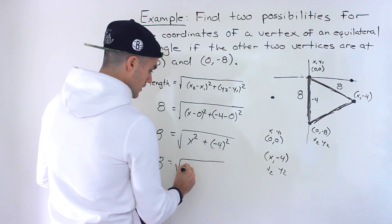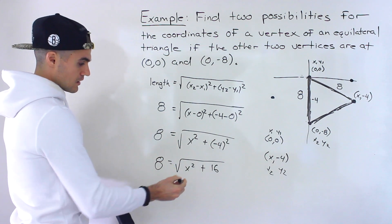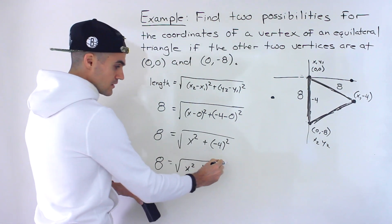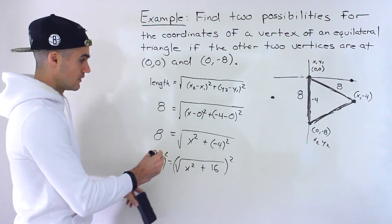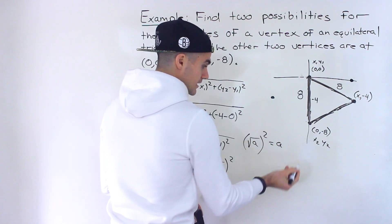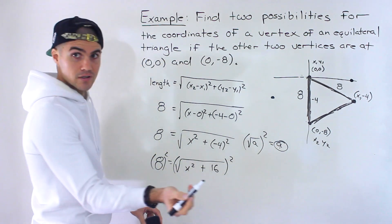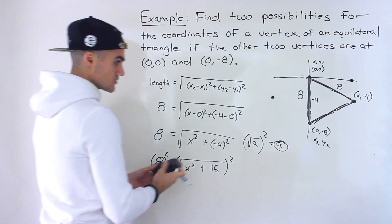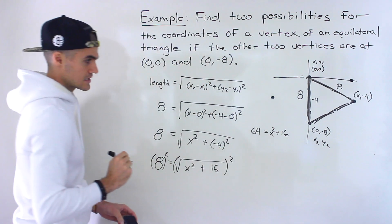So we'll have eight equals the square root of x squared plus — notice here — negative four to the power of two is going to be 16. We're still solving for this x value. So if we want to isolate for x, we want to first get rid of this square root. What we want to do is square both sides — what you do to one side, you've got to do to the other. To get rid of a square root, you just square it and it's going to give you that expression on its own. So squaring both sides, we would end up with 64 equals x squared plus 16.